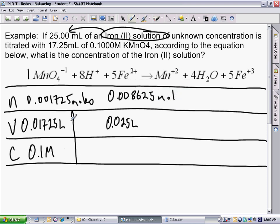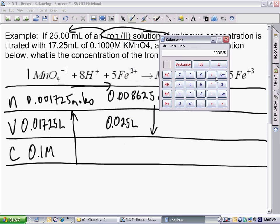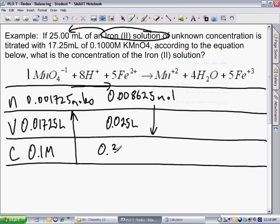Now we've calculated the moles of our known. We used stoichiometry to calculate the moles of our unknown, and now we will divide moles divided by volume to calculate our concentration of our unknown. 0.008625 divided by 0.025 is 0.345.